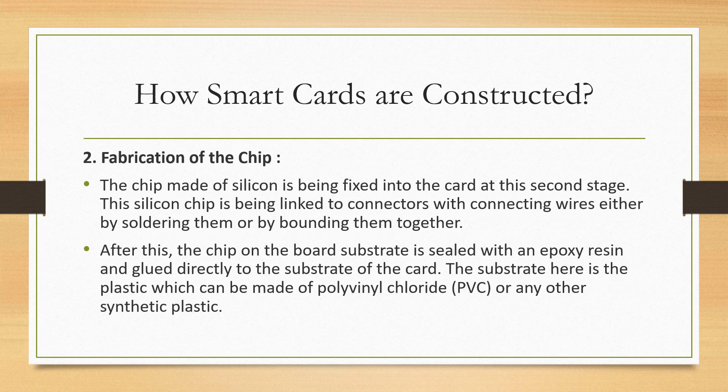The second step is fabrication of the chip. The chip, made of silicon, is fixed into the card at this stage. The silicon chip is linked to the connectors with connecting wires, either by soldering or by bonding them together. After this, the chip on the board substrate is sealed with an epoxy resin and glued directly to the substrate of the card. The substrate is the plastic, which can be made of polyvinyl chloride (PVC) or any other synthetic plastic.